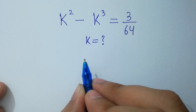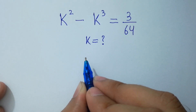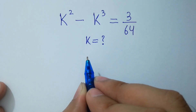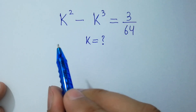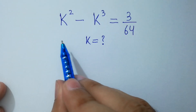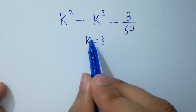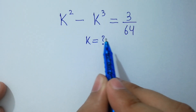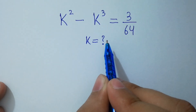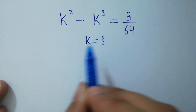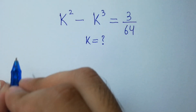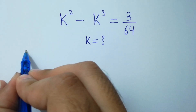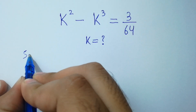Hello friends, find the value of k if k squared minus k cubed equals 3 over 64. Let's solve it.